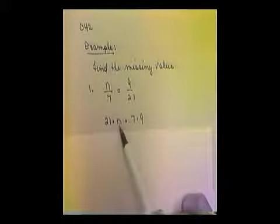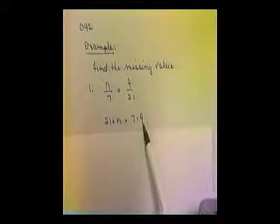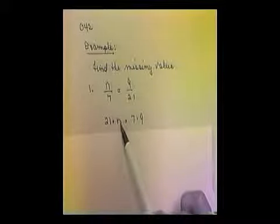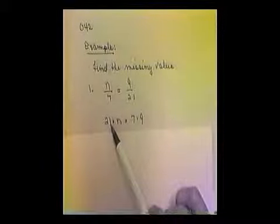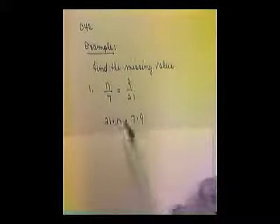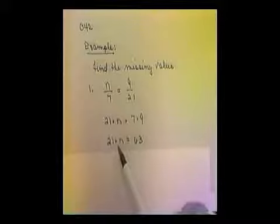So we get 21 times n is equal to 7 times 9. The second step is to divide both sides by the 21. Notice we're multiplying by 21 times n. To get rid of it, division is always the inverse or opposite operation from multiplying. So we're going to divide both sides by 21.